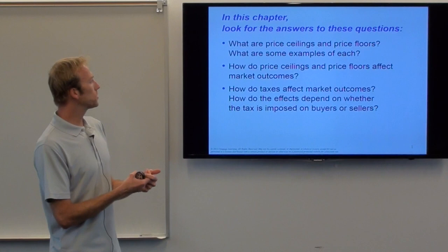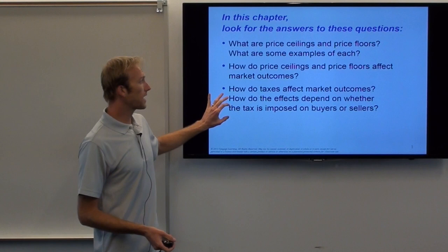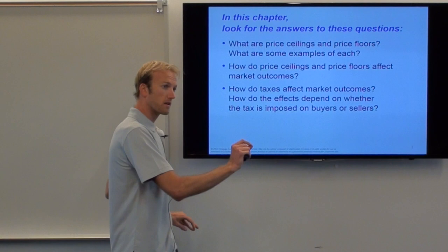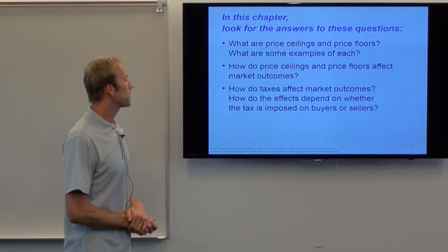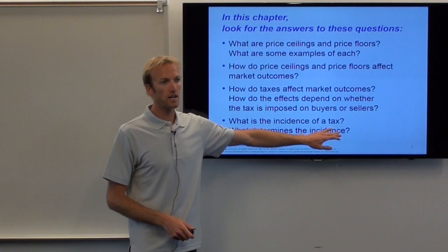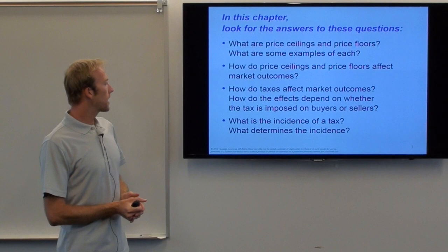And finally, the third way governments can get involved in the marketplace — and this is very common — is taxes. We didn't even have anything about taxes last time we were talking about buying and selling, but almost every time you've ever purchased or sold something, you've probably had to pay some sort of tax. So it would be an unrealistic assumption to not talk about taxes. We'll look at the effect on the marketplace if the government taxes buyers or sellers, and decompose those effects.